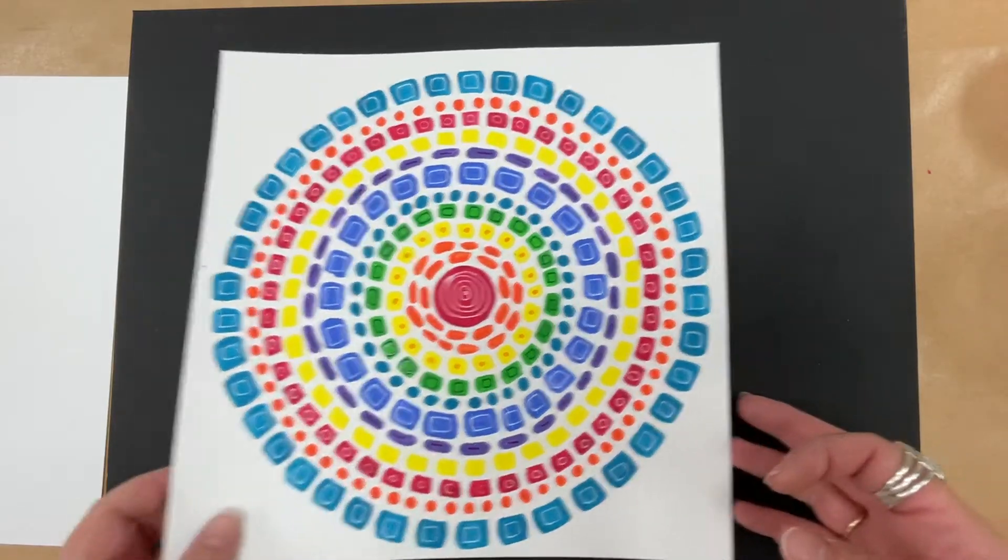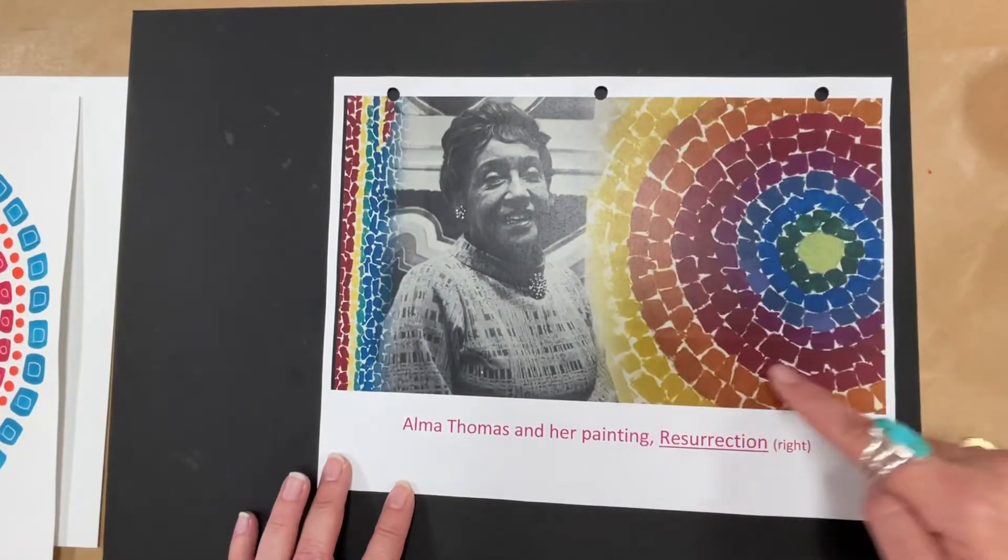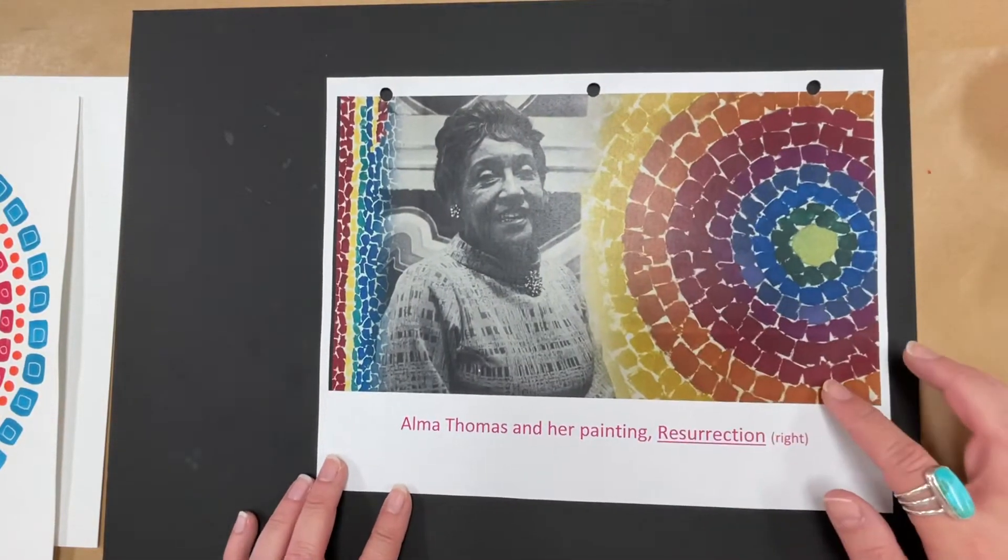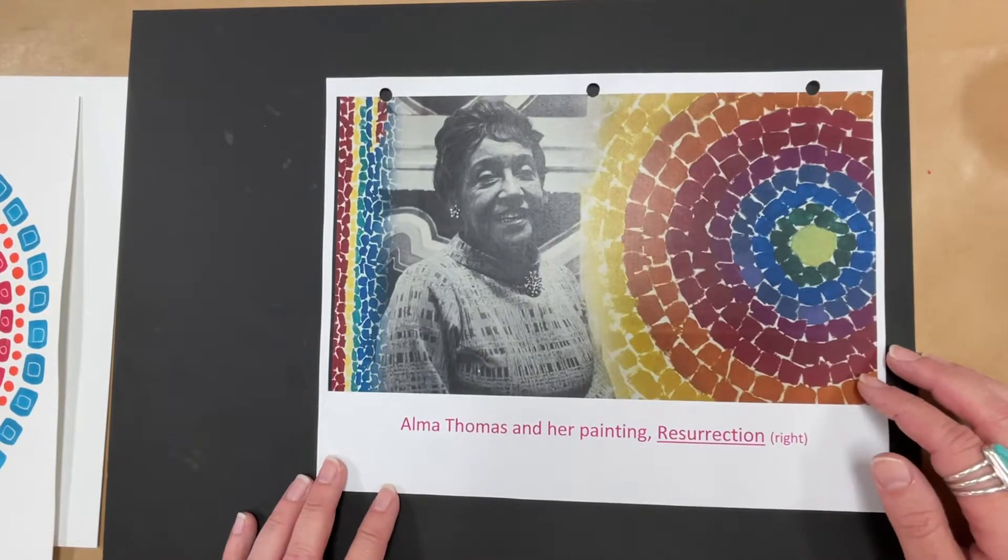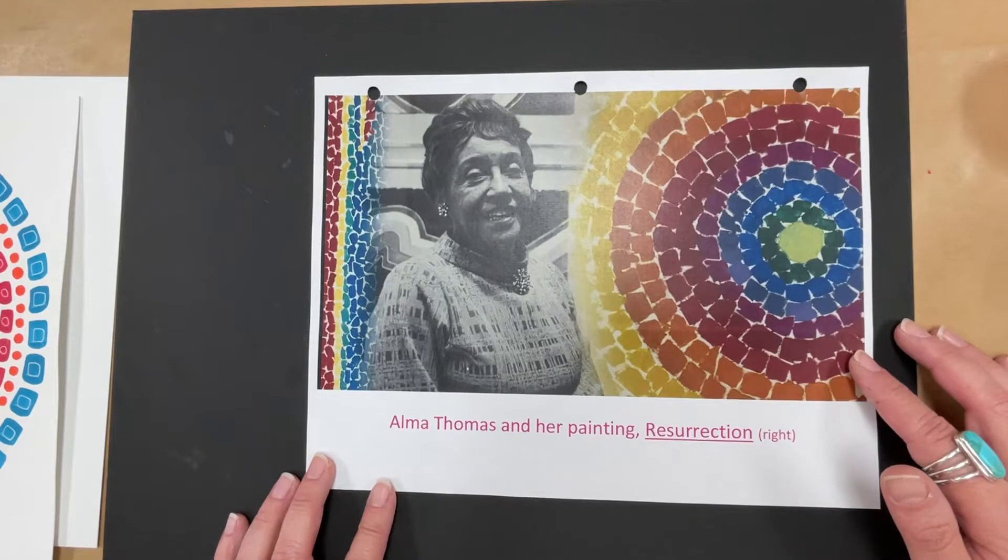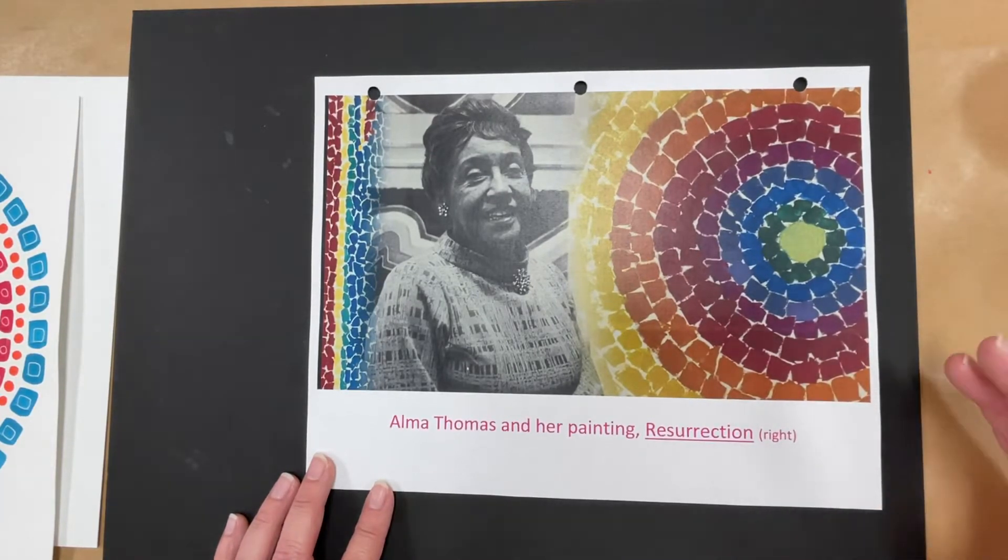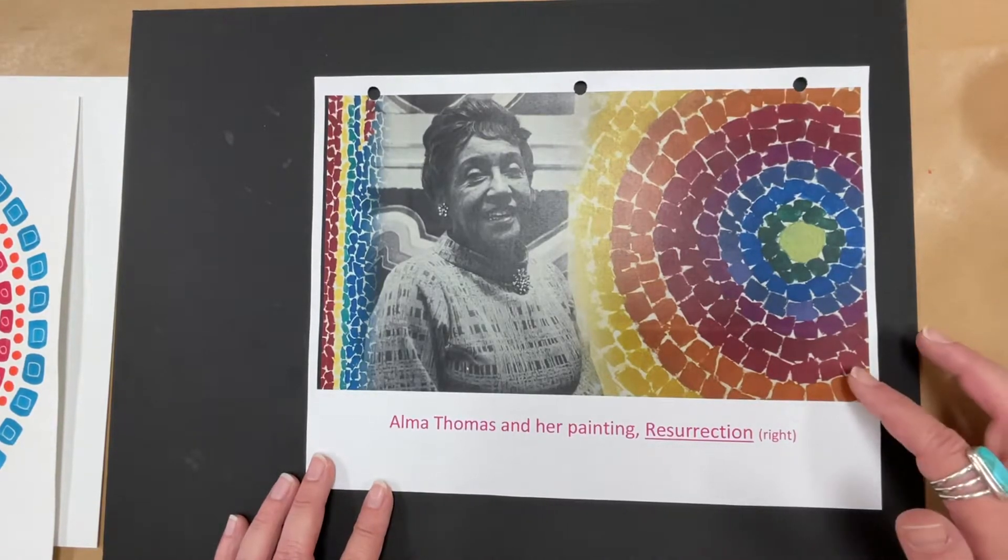First of all, let me show you Alma Thomas, a little bit about her. This is Alma Thomas and this is her painting called Resurrection. Alma Thomas was a well-known artist who worked most of her life as an art teacher. It wasn't until she was older that she began painting and got recognition for her painting. She became well-known for her colorful abstract paintings that resemble mosaics.